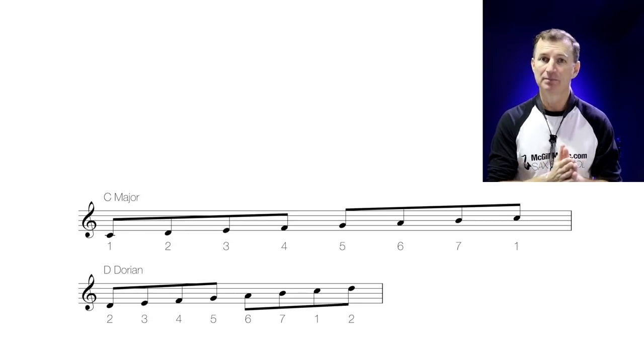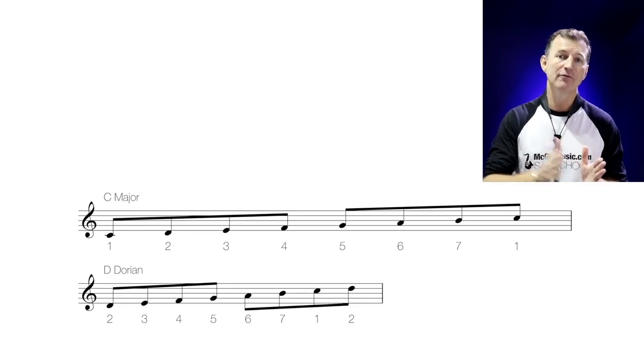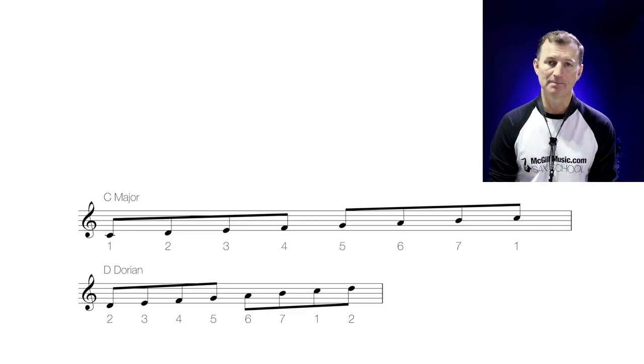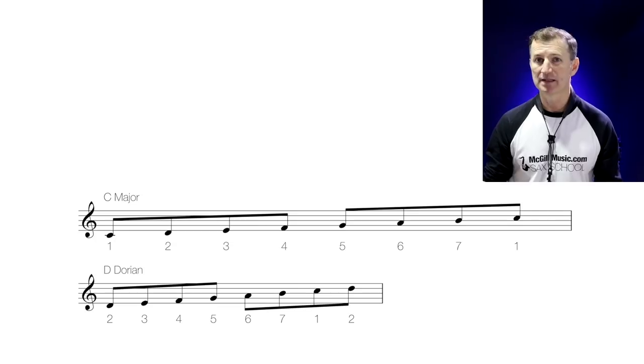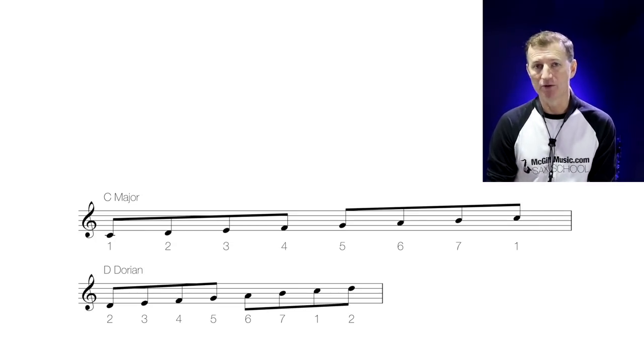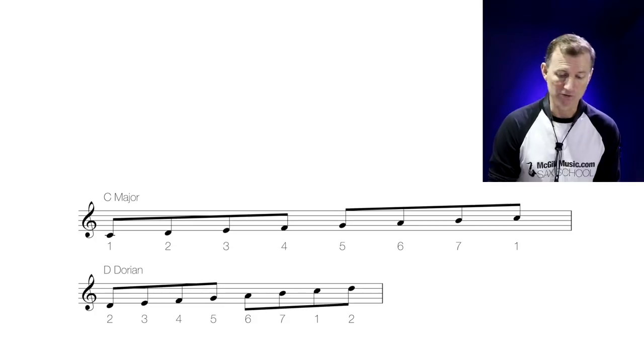You can use that same principle to build up a mode on every single note of a major scale. There are seven different modes. Now the good news is you could go out and learn all of those jazz modes, but you really don't need to. For now, in this mini course, we're really only going to focus on two modes — the ones that you're going to use the most often when you're improvising. The first one is the Dorian mode starting on the second degree of the scale, and the other one is the Mixolydian mode. Fancy term, but basically it's just a mode that's built on the fifth degree of the scale.